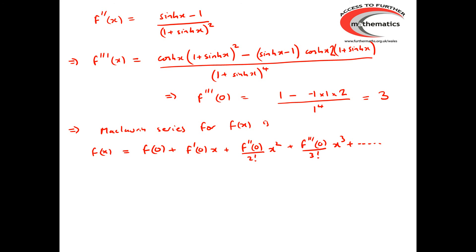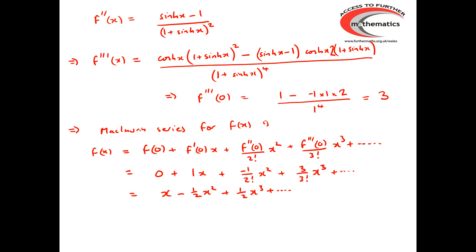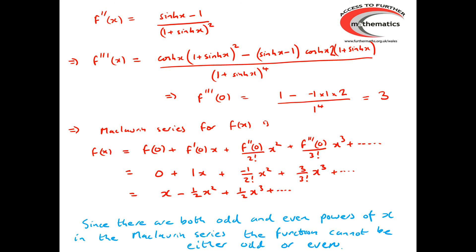The Maclaurin series is f(0) + f'(0)x + f''(0)/2! x² + f'''(0)/3! x³, etc. In this case that is 0 + x − (1/2)x² + (3/6)x³, which simplifies to x − ½x² + ½x³. The fact that we have both odd and even powers of x means the function can't be odd (an odd function would only have odd powers) and can't be even (an even function would only have even powers).